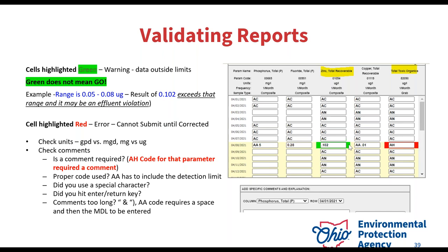The system has a very general range because it can't be unique to every single permit — your permit might have a special limit, whereas someone else's might not. Green just means check it to make sure your sample is still within the legal range your permit says. If it is, you can ignore it and continue to submit. If it's not, you might have to fill out an additional form to stay in compliance.